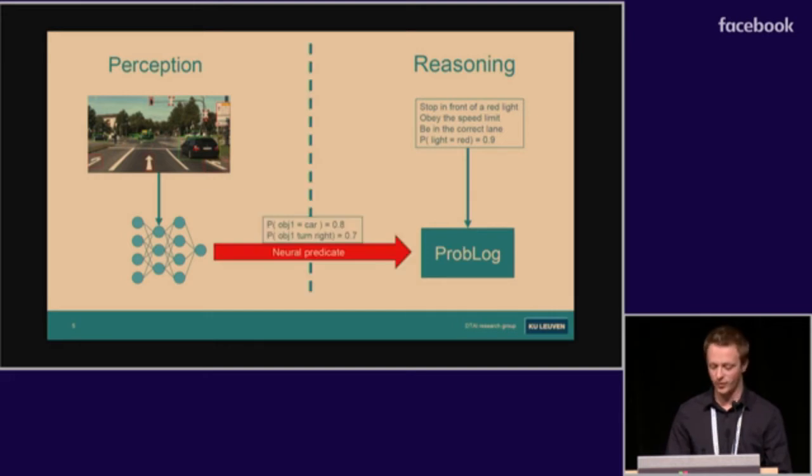The neural predicate is simply the bridge between both, taking the probabilistic output of the neural network and putting it in the program while still maintaining a clear distinction between both sides.